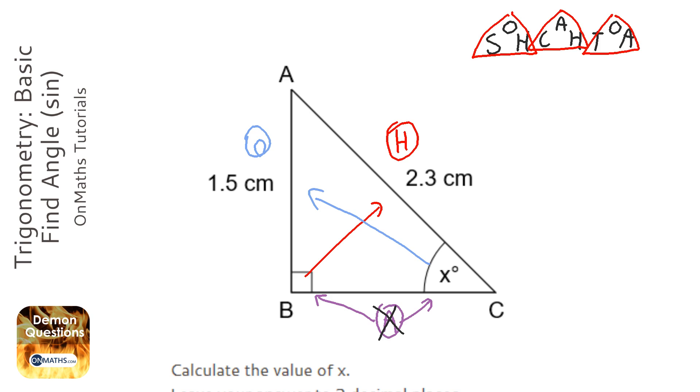And the next step is you cross out the two that we don't need. Now, because I've crossed out the adjacent, I'm going to cross out all of these with the adjacent in. So this one, and this one. And it just leaves me with SOH.